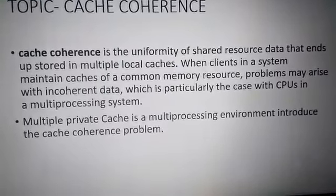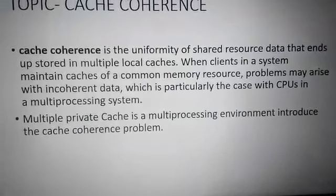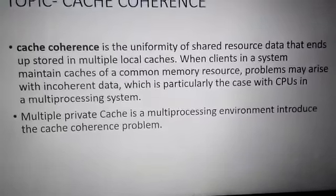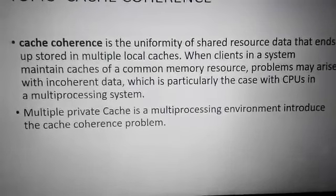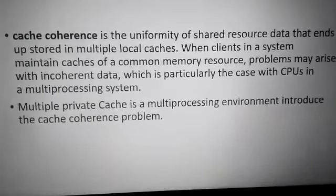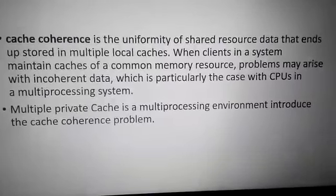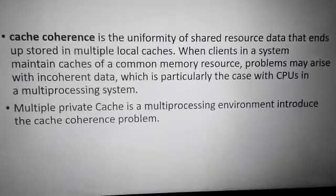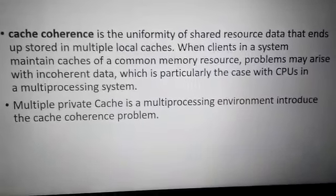Cache coherence is the uniformity of shared resource data that ends up stored in multiple local caches when clients in a system are using caches of a common memory resource. Yahan par ek common memory hai jo bus se attach hai, processor aur memory ke beech memory ka local cache hai. Problem arises with inconsistent data, which is particularly the case with CPUs in a multiprocessing system.